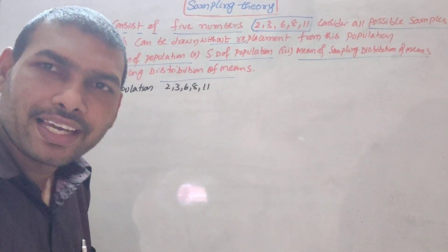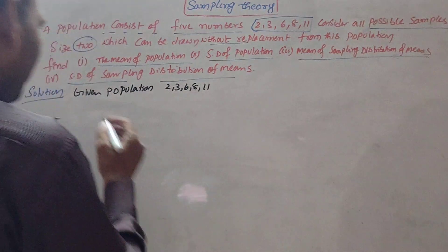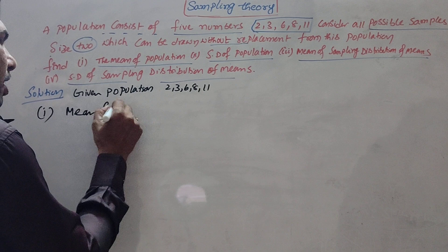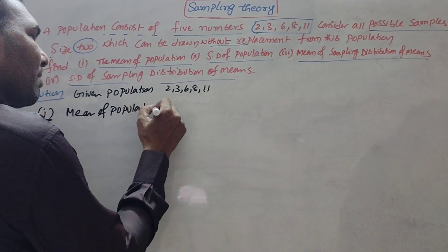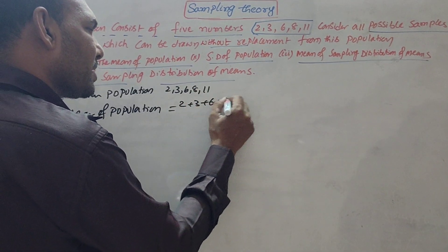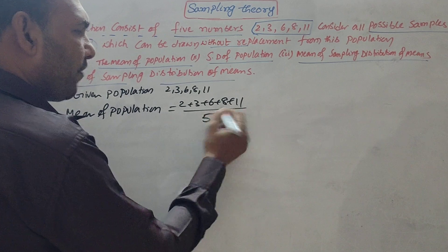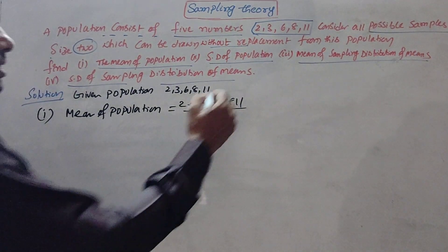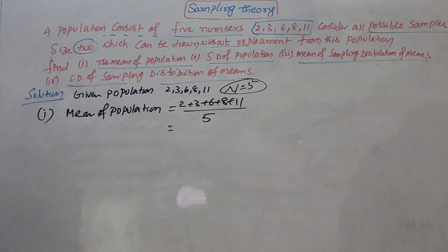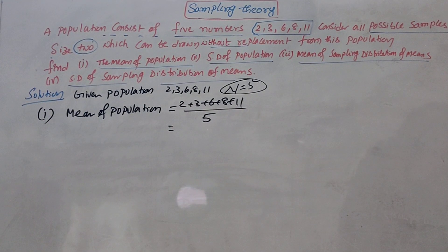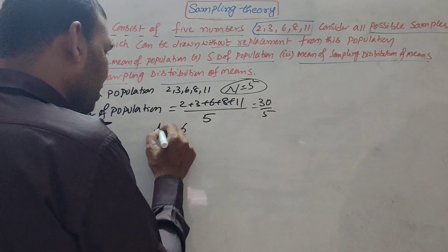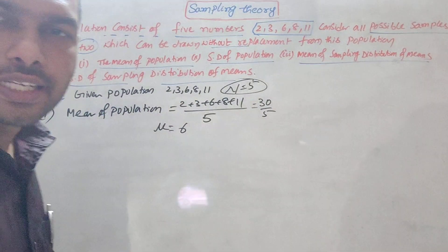For the mean of population, we add all items: 2 + 3 + 6 + 8 + 11, divided by the number of items, which is 5 (the population size, capital N = 5). Adding all gives 30, so 30 divided by 5 equals 6. The mean of the population, represented by mu (μ), is 6.